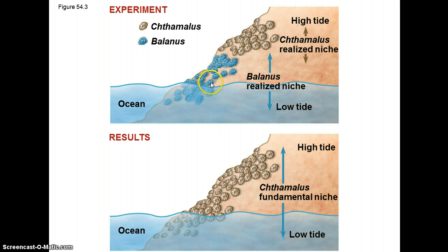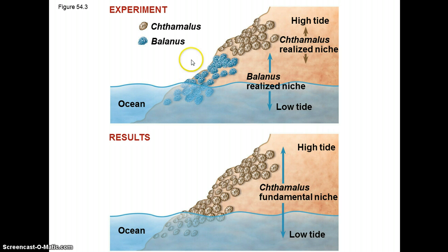You'd think that's because Balanus likes it down lower. But curiously, when you remove Balanus, the other species — Chthamalus — will expand its range. It can actually live throughout the tide line, but normally doesn't because of competition with Balanus. Thus, Chthamalus's realized niche is more constrained than its fundamental niche. In contrast, for Balanus, its fundamental and realized niches are kind of one and the same with respect to this interaction — when you remove Chthamalus, Balanus does not expand.